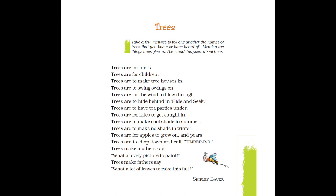Trees are for apples to grow on and pears — on trees there are many sweet and lovely fruits that grow for us. Trees are to chop down and call timber — once the trees are old enough, fully grown and no longer producing fruit, we can cut down those trees and use them for furniture. Once the trees are chopped down, they are called timber.